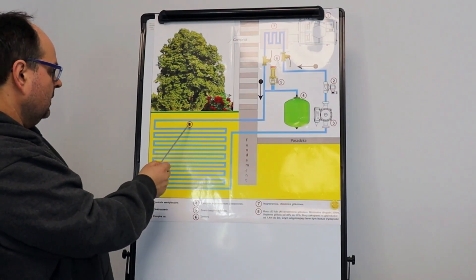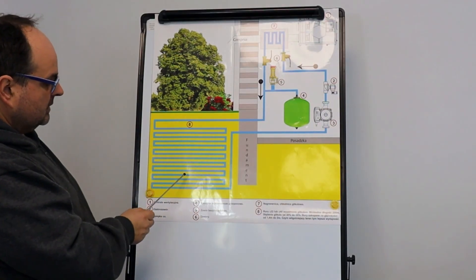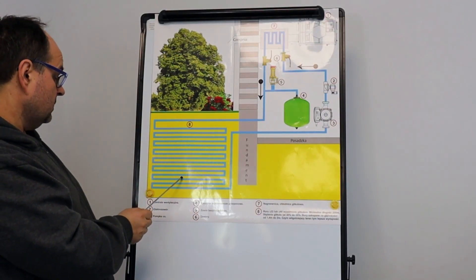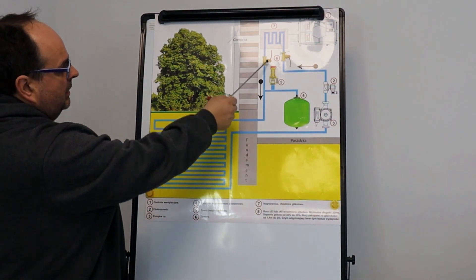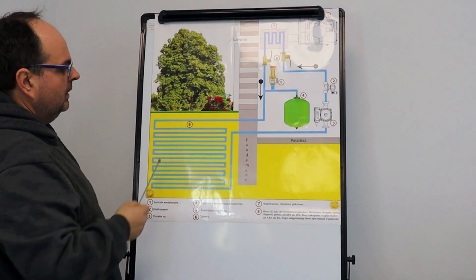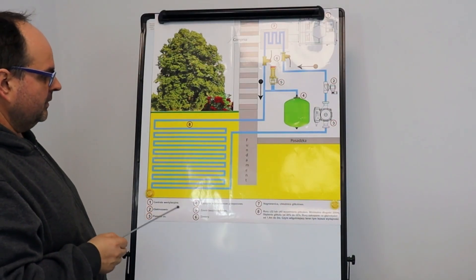You just need to dig a two meter hole and lay out these hoses. I've given an example. There are several ways to lay out these hoses. You can find them on the internet. Connecting this can also be done by any plumber.